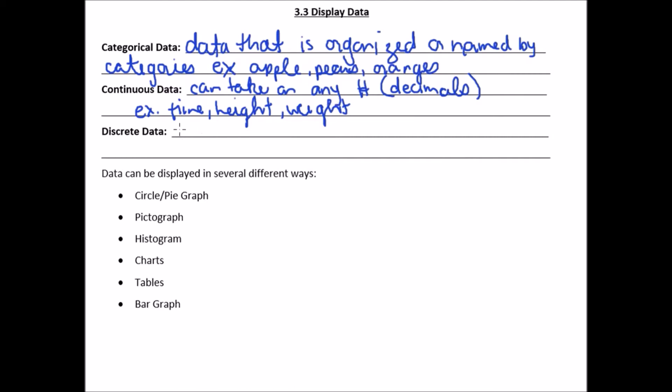Discrete data is data that can only take on certain values. Okay. So an example of this is like a basketball score. So you can't say, Oh, I scored 3.25 baskets today. That doesn't make sense. So basketball score or even like a score in a hockey game, football game.